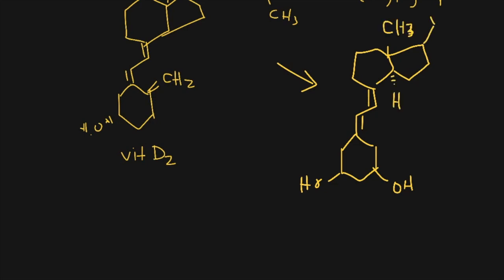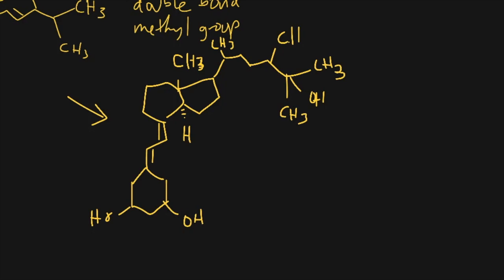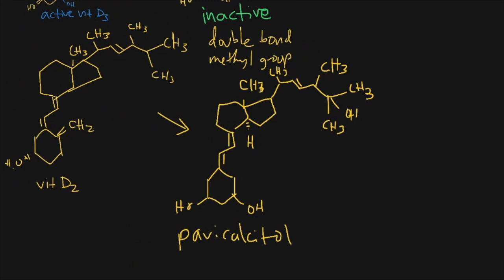The next vitamin D2 analog is paricalcitol. Why is it a vitamin D2 analog? Vitamin D2 has the double bond in the middle and the methyl group — those are the differences between D2 and D3. Paricalcitol has both of those features. Is it active? It's active because it has the 25-hydroxy at the top and the 1-hydroxy at the bottom. If you have both the 1 and the 25 hydroxyl, you have an active molecule.